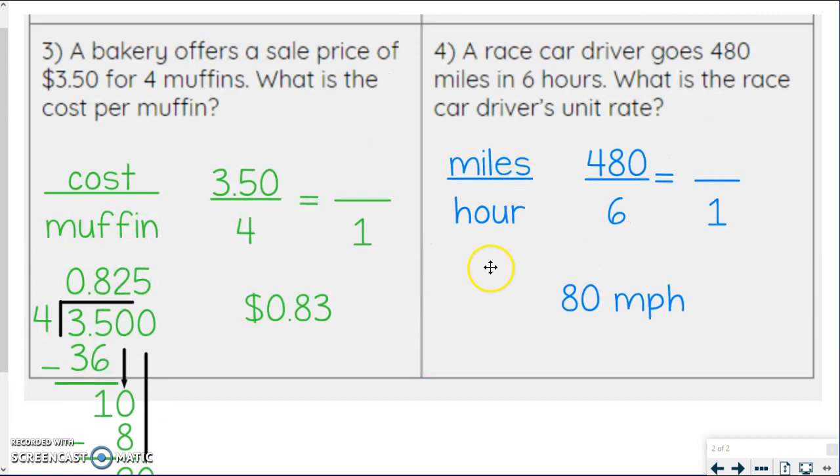Okay. Our example over here was dealing with miles and hours. They gave us 480 miles in six hours. We want to know what that unit rate would be. So we're dividing by six. So 480 divided by six is going to be 80 miles per hour. And you can just put MPH if you'd like.